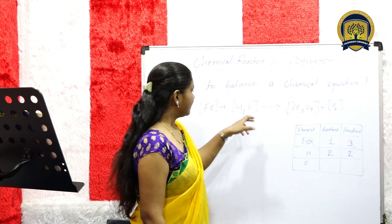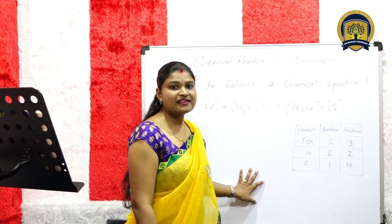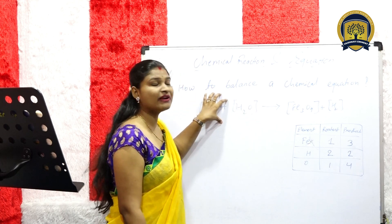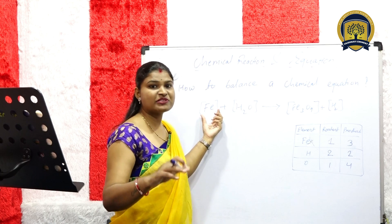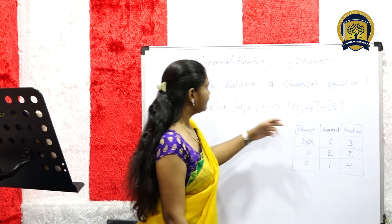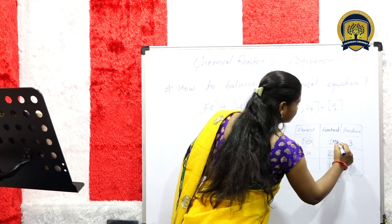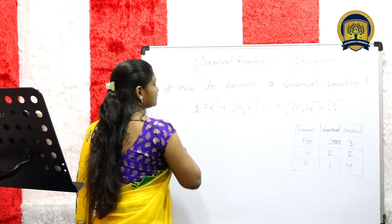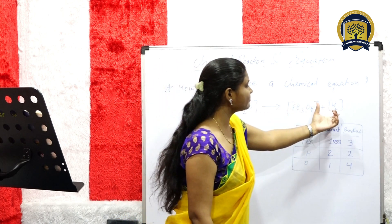Now we will see oxygen. On the reactant side, oxygen has only one atom, and on the product side, oxygen has four atoms. Now we have to balance this equation. The chemical equation is enclosed in brackets — it means if we have to multiply all the atoms, we will not change anything inside the bracket. On the reactant side there is one atom of iron; in the product there are three atoms. So we multiply by three to make both sides equal. When we multiply three atoms on one side, we also add three atoms on the other.